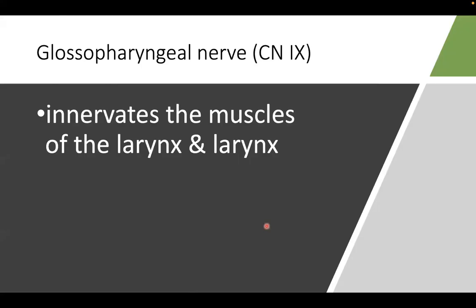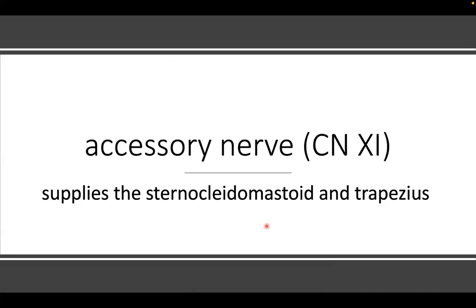The glossopharyngeal nerve innervates the muscles of the larynx and the larynx itself. The spinal accessory nerve, cranial nerve 11, innervates two muscles: remember the sternocleidomastoid and the trapezius.